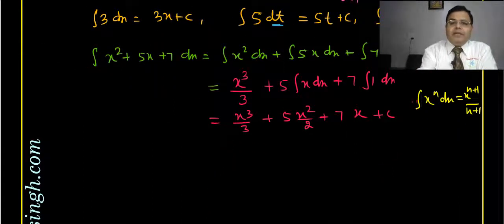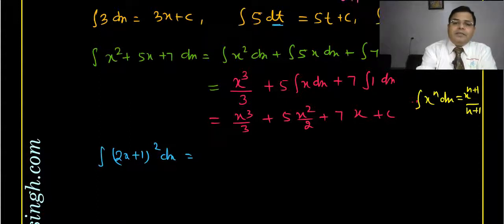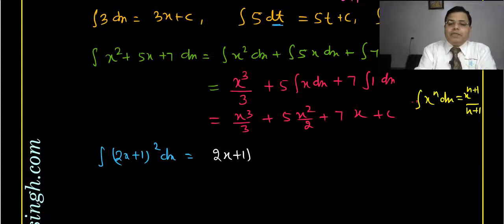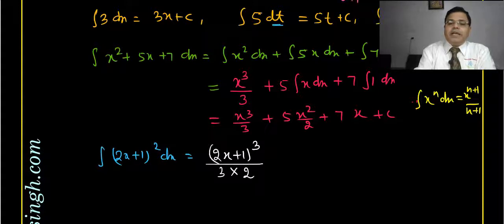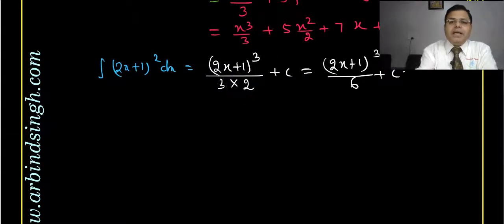One more example: ∫(2x+1)² dx. The direct formula is applicable similarly to differentiation. You can write the answer as (2x+1)³/3, and since in differentiation you multiply by the coefficient of x, in integration you divide by it, giving (2x+1)³/6 + C.